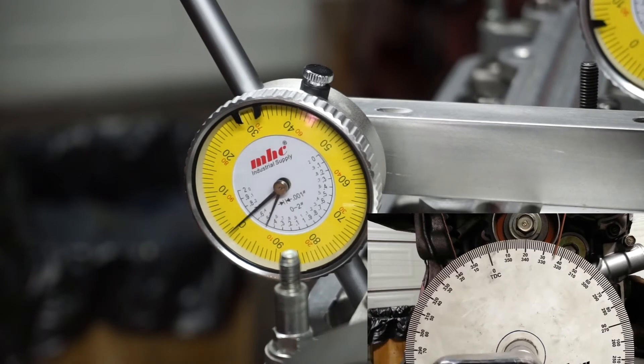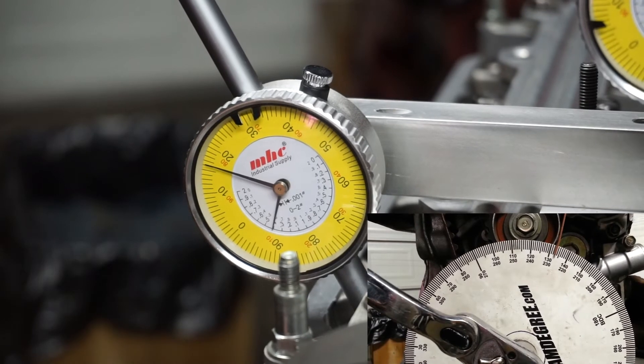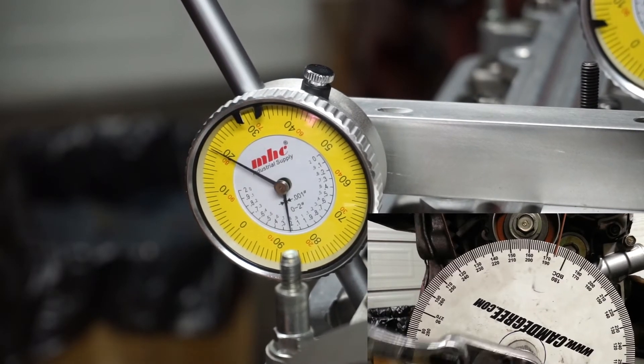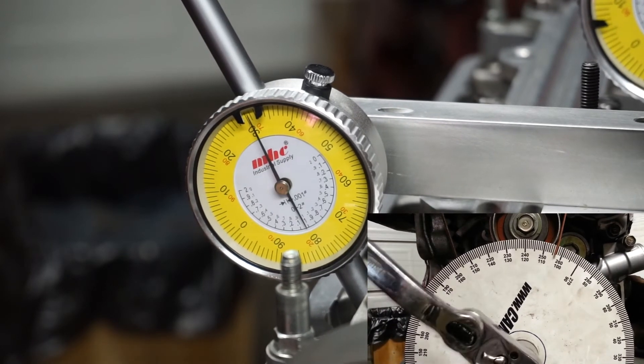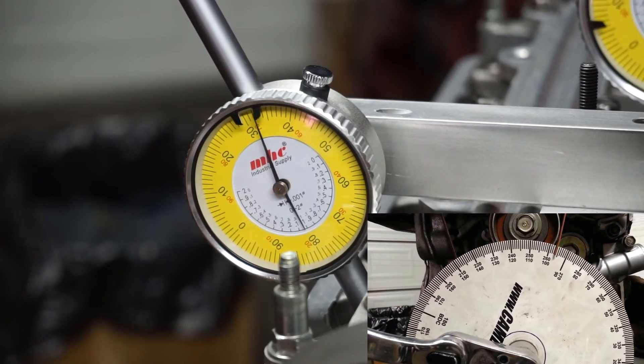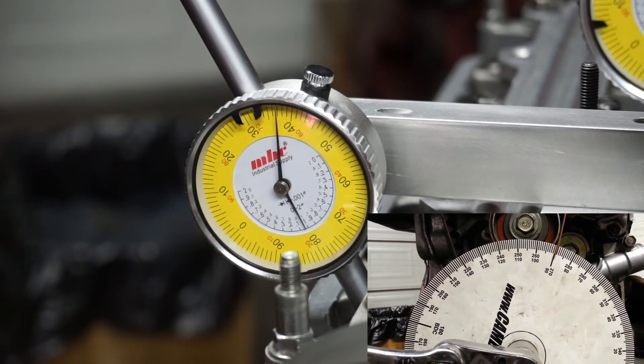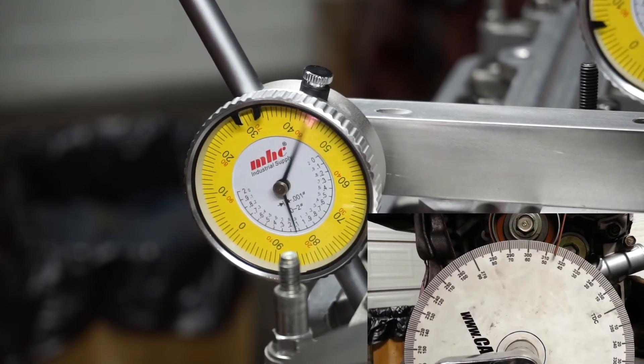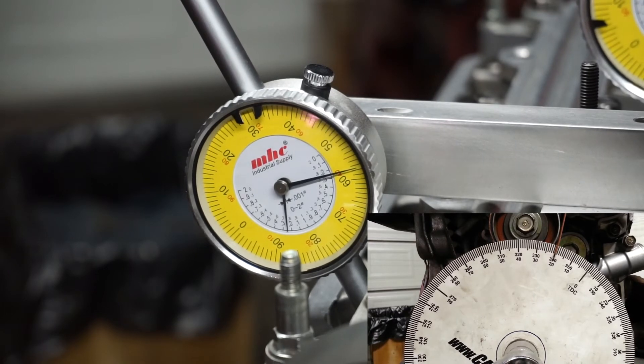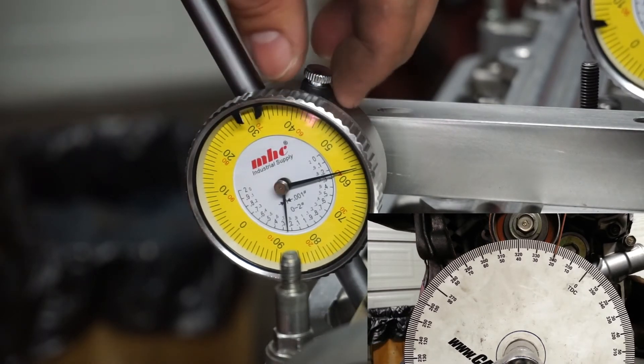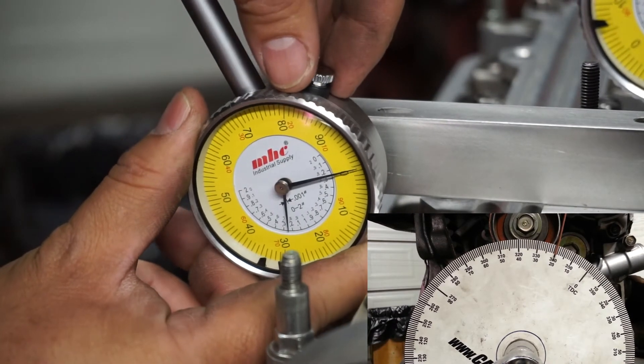Start rotating until you get into the exhaust stroke coming up. It's usually when the exhaust cam is starting to close - that's where it's most critical between the exhaust stroke and the intake stroke, the overlap. I'll get to 20 degrees before top dead center here. I'll stop right there, that's 20 degrees. I'll zero my gauge here, dial indicator. Zero it.